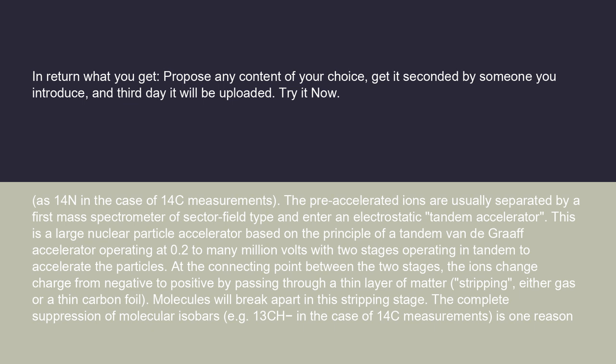The ions enter an electrostatic tandem accelerator — a large nuclear particle accelerator based on the principle of a tandem Van de Graaff accelerator, operating at 0.2 to many million volts, with two stages operating in tandem to accelerate the particles. At the connecting point between the two stages, the ions change charge from negative to positive by passing through a thin layer of matter — stripping — either gas or a thin carbon foil.